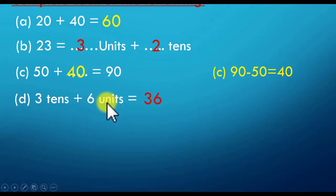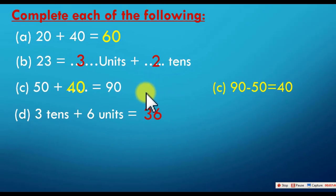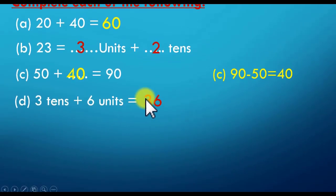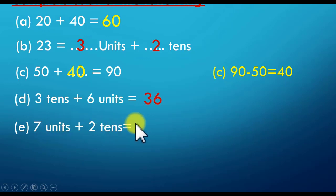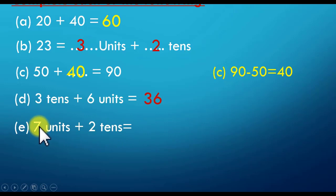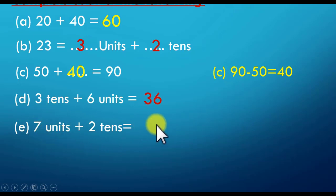We know that units are here and tens are here. 7 units plus 2 tens: each digit goes in its correct place. There's no such thing as 'first digit goes here, second goes there' — each one goes in its proper place. The 7 belongs in units, so write it in units. The 2 belongs in tens, so write it in tens. The number is twenty-seven.